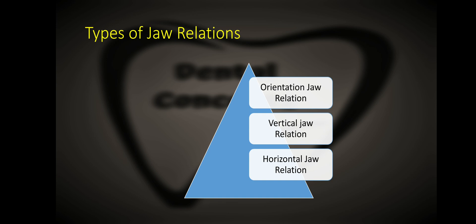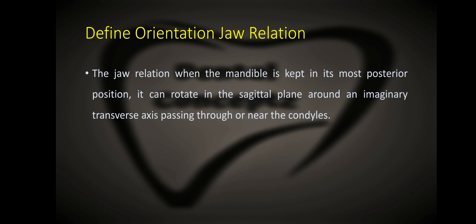What is orientation jaw relation? Orientation jaw relation is the jaw relation when the mandible is kept in its most posterior position. It can rotate in the sagittal plane around an imaginary transverse axis passing through or near the condyles.